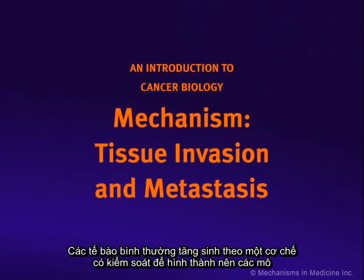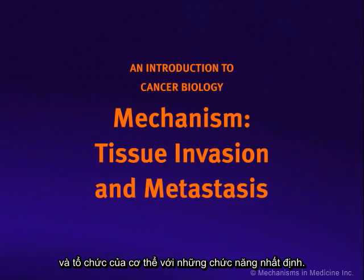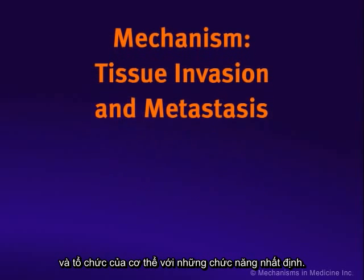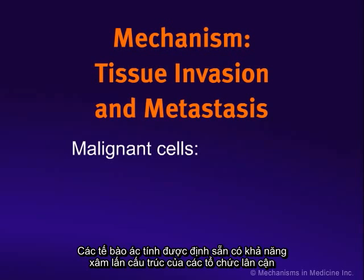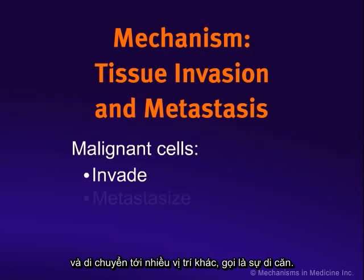Normal cells grow in a controlled manner to form tissues that form organs with specific functions. Malignant cells are defined by their ability to invade adjacent normal structures and be disseminated or metastasized.